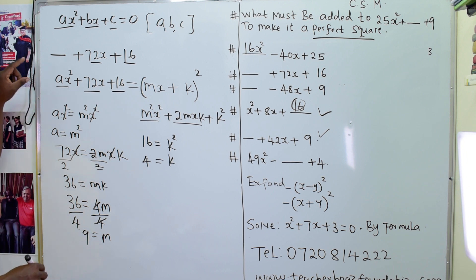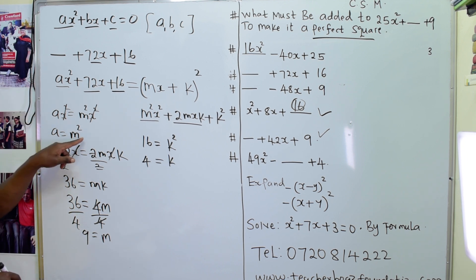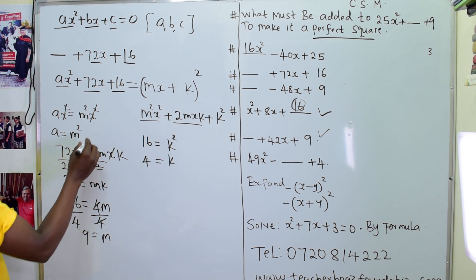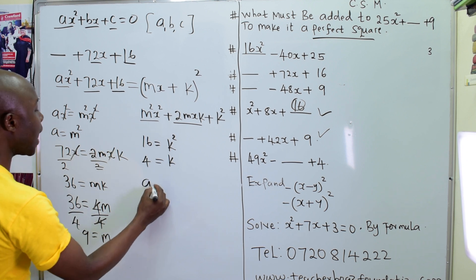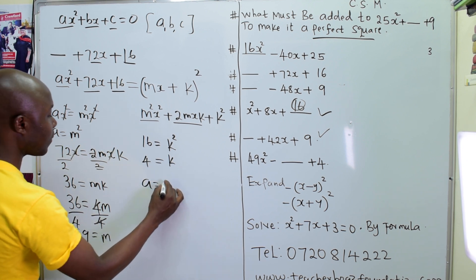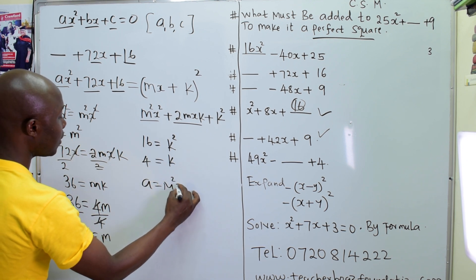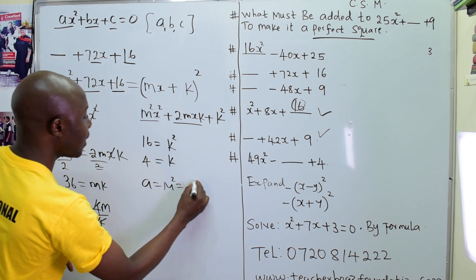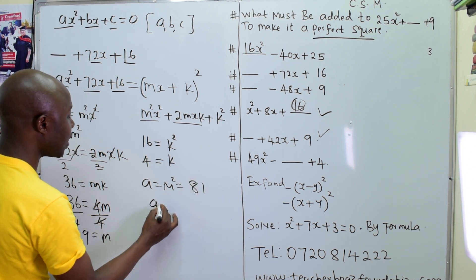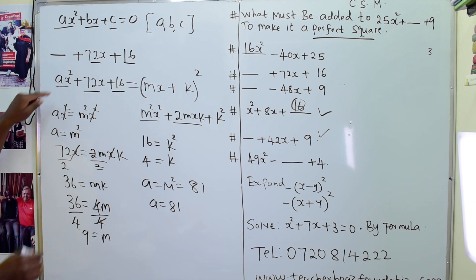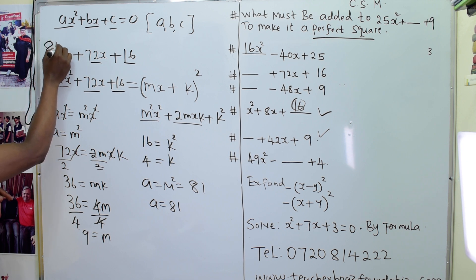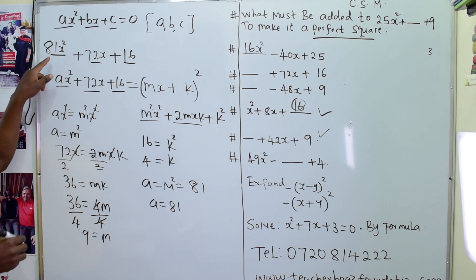Since k equals 4 and mk equals 36, we get 4 times m equals 36, so m equals 9. And since a equals m squared, we square 9 to get 81. So the value of a is 81, meaning the missing term was 81x squared.